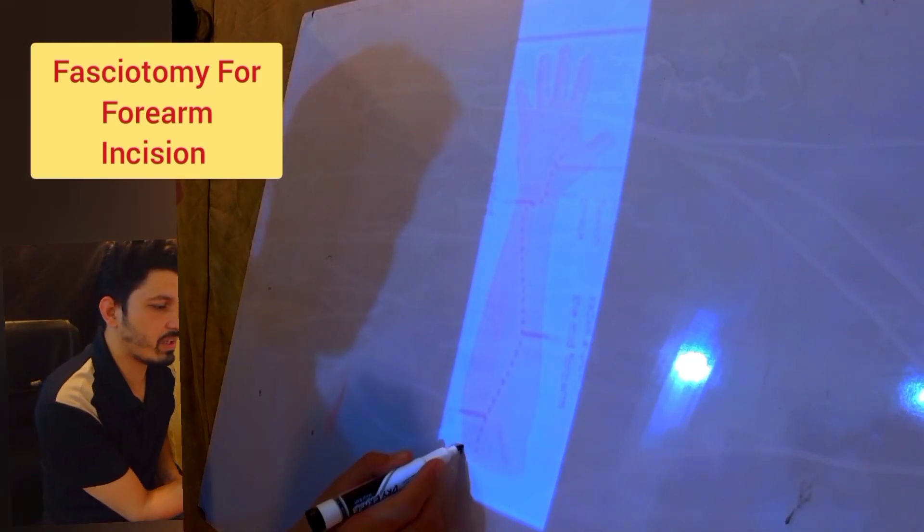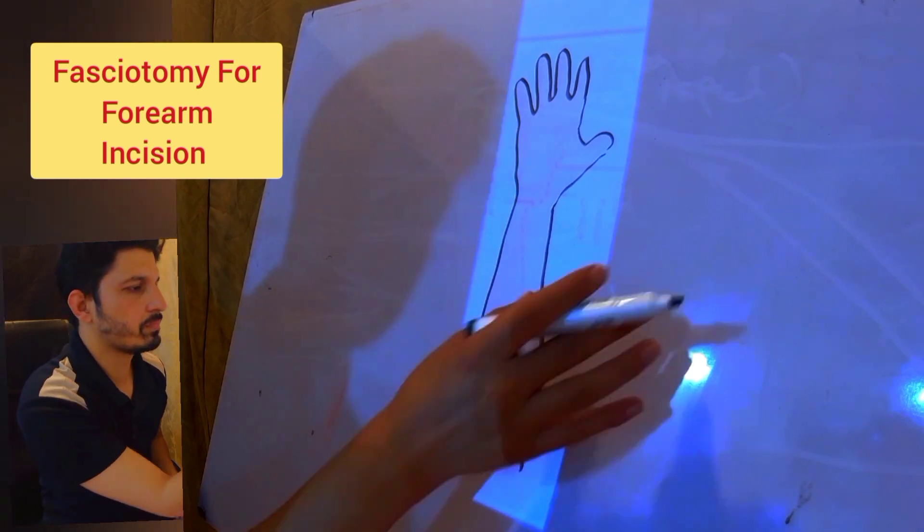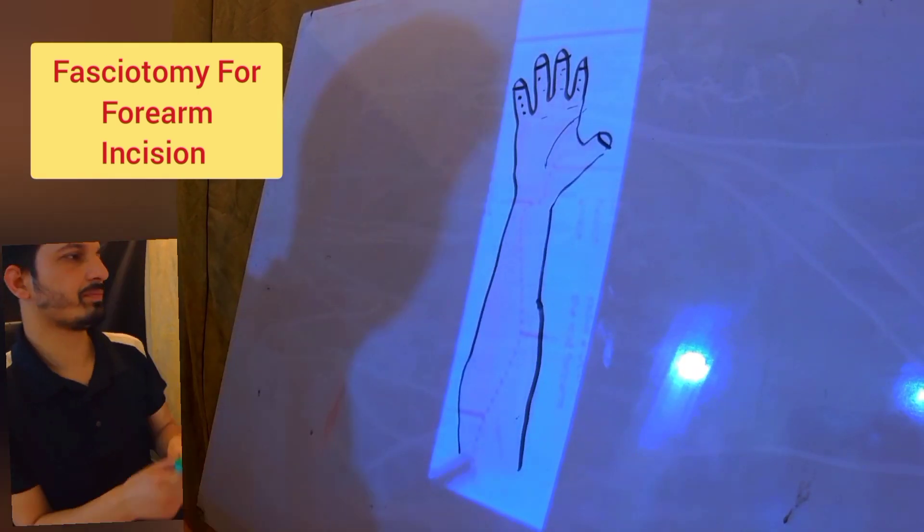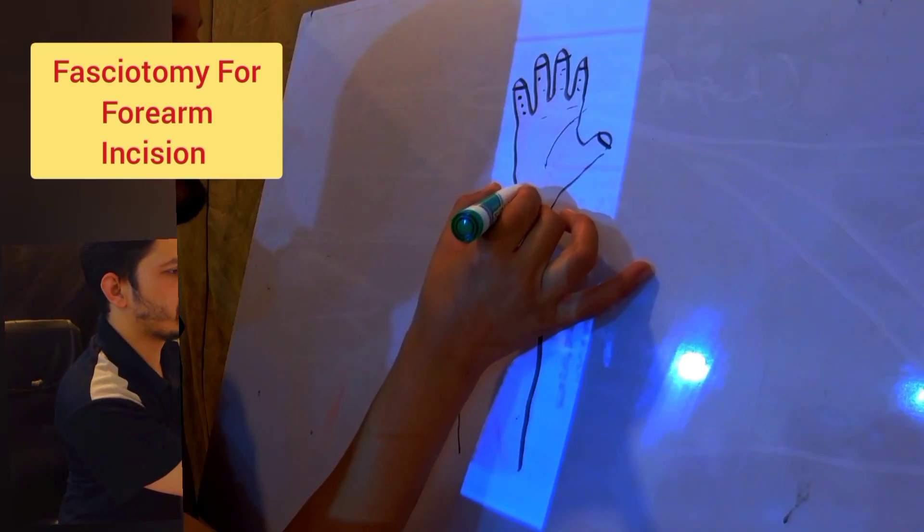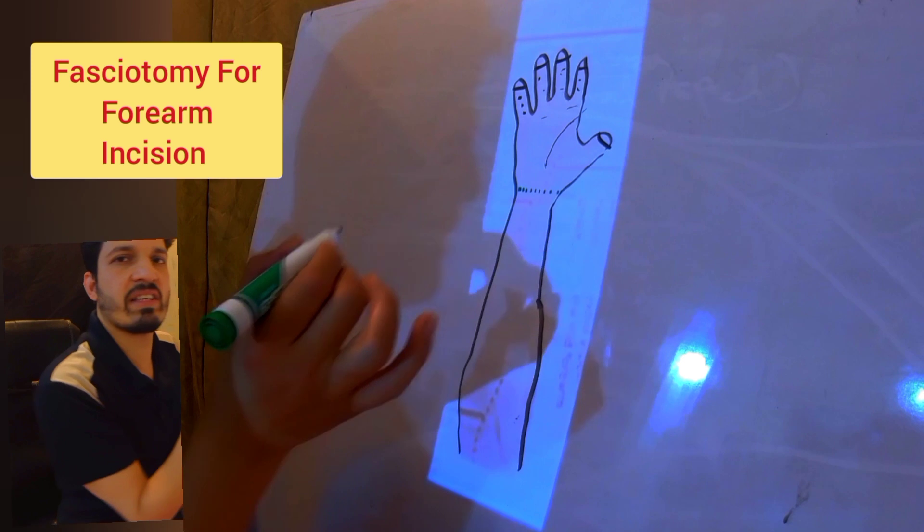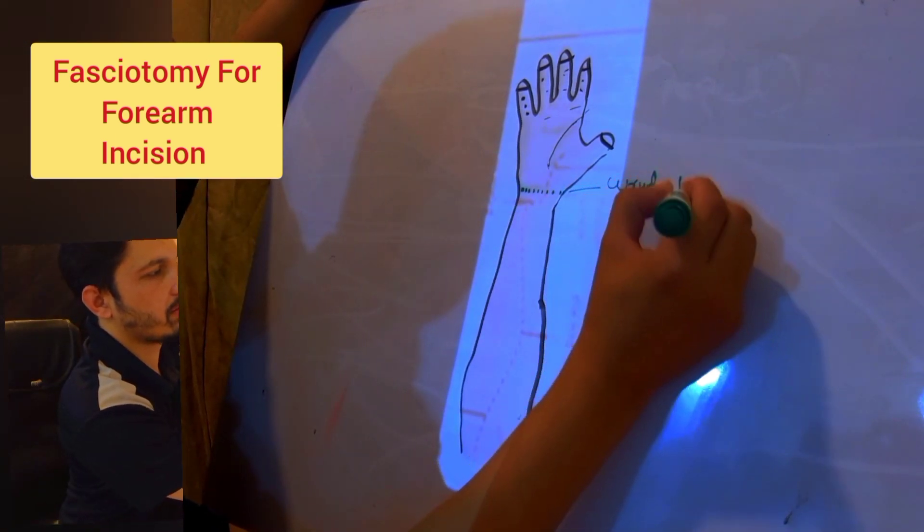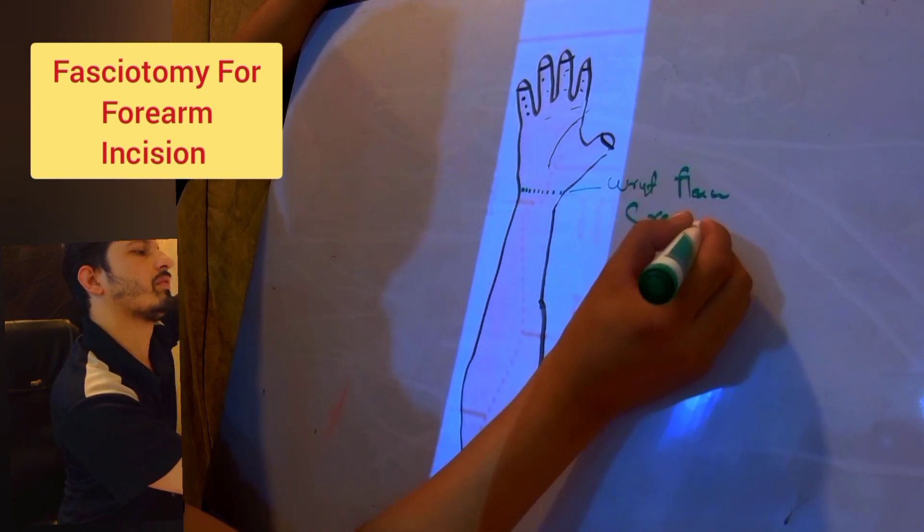Let's draw the hand to demonstrate the incision for fasciotomy in the forearm. It's somewhat complicated, so let's start. This area is the wrist flexion area, okay? I'm marking this, and your incision should start almost 3 centimeters distal to the wrist flexion crease.